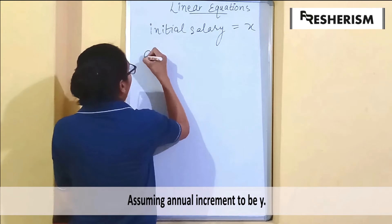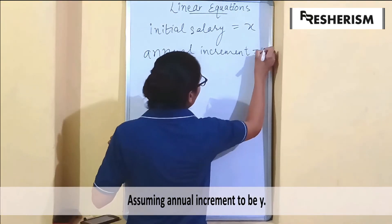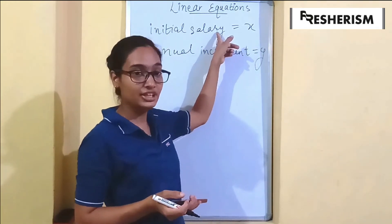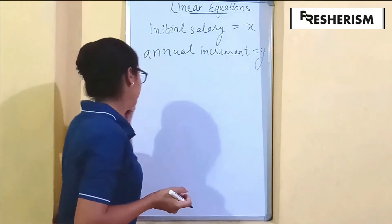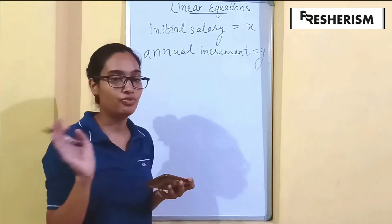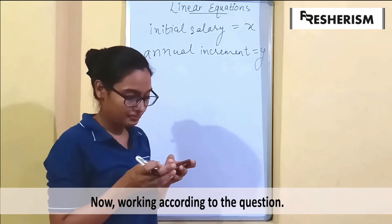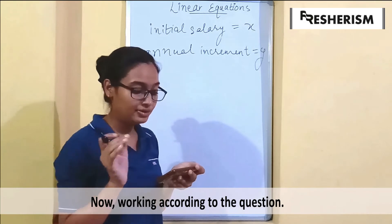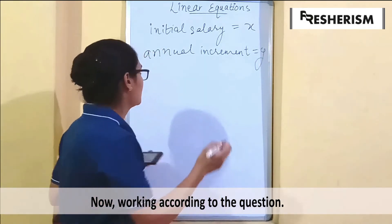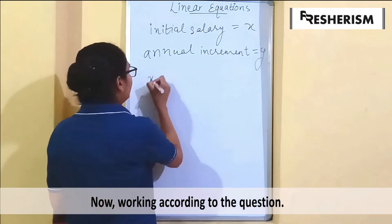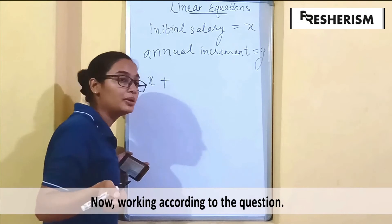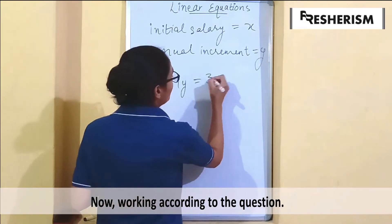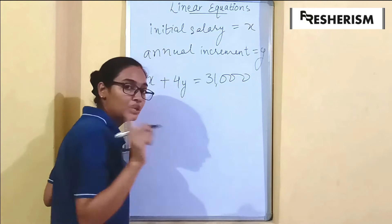There is a constant annual increment — let us say that is y. So we have assumed x for initial salary and y for annual increment. We use the given information to form equations. His salary after four years of service means initial salary x plus four years of increment, so x plus 4y equals 31,000. This becomes our first equation.